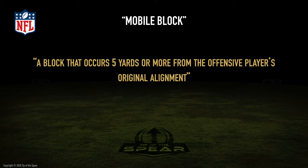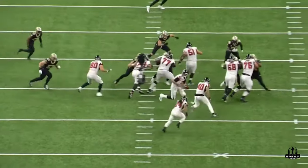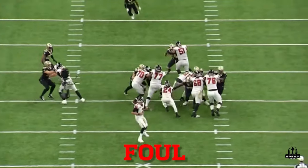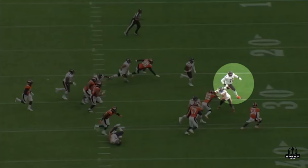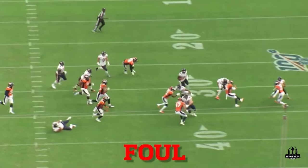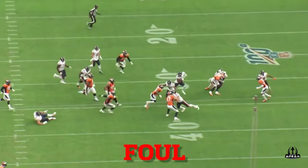A mobile block is defined as a block that occurs 5 yards or more from the offensive player's original alignment. Common mobile blocks include lead blocks on plays like ISO, offensive linemen pulling on plays like power, or blocks out in space or in the alley. The forces involved in these blocks require contact to be made with the shoulder, but still too many players rely on their helmet to engage in contact.